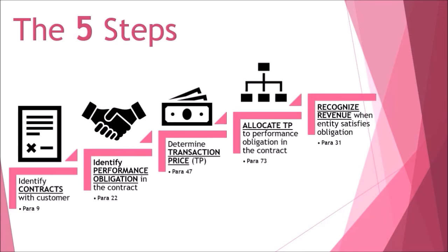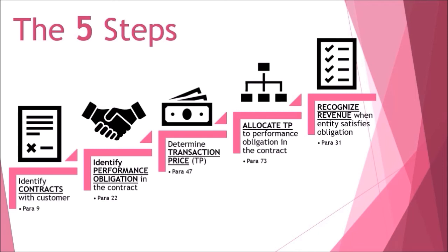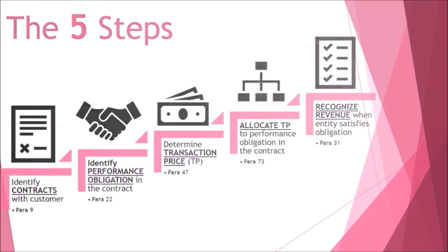Step number five: recognize revenue when or as the entity satisfies those performance obligations. The amount of revenue recognized is the amount allocated to the satisfied performance obligation. You tick-mark each obligation as and when it is satisfied. If a performance obligation is satisfied over a period of time, the entity recognizes revenue over time by selecting an appropriate method of measuring progress — for example, as happens in construction contracts.